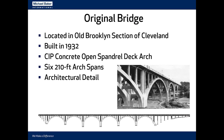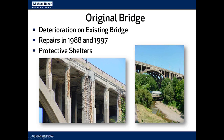The original bridge at the site was a cast-in-place open spandrel concrete deck arch. It was built in 1932, featured six 210-foot arch spans, and had a lot of architectural detail as you can see in this photo. Unfortunately, the bridge was not maintained very well — that nice cantilever and railing were removed and replaced with just a chain-link fence.